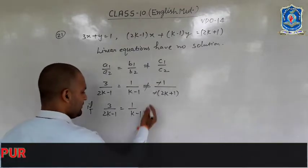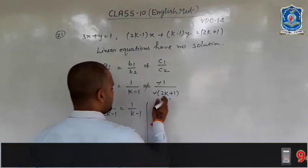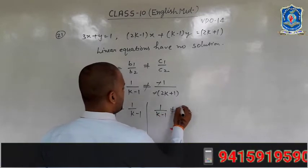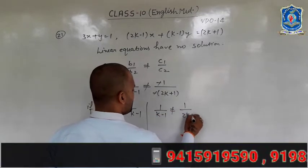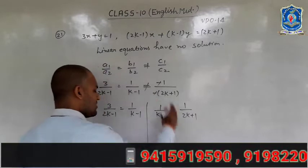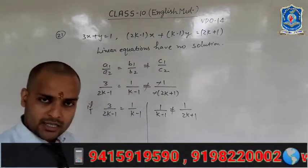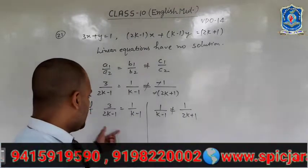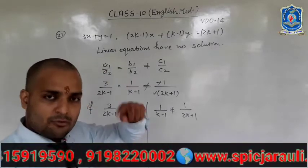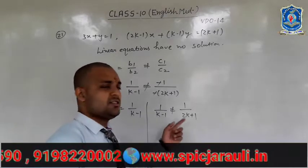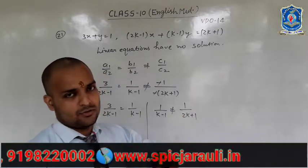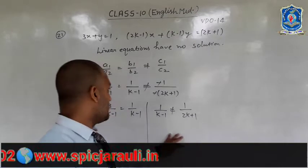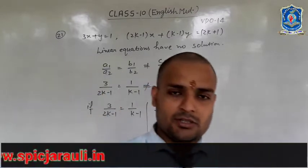So K will have two sets of values: values from the 'equals' condition and values from the 'does not equal' condition. You can solve it yourself. If you have any problem, contact me. That was question number 21.